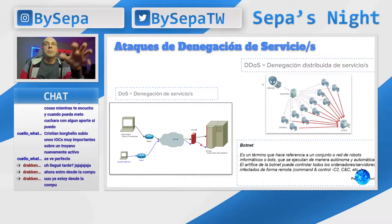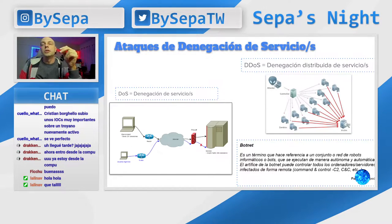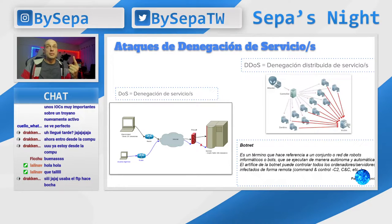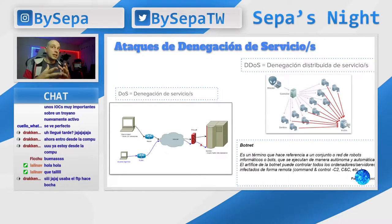¿Qué es un servicio? Un servicio, por ejemplo, es una página web, un FTP donde se bajaban archivos, un SSH que es un puerto donde te conectás para administrar un servidor, o un RDP en Windows. ¿Qué producen estos ataques? Justamente bajan ese servicio para que los usuarios legítimos no puedan acceder. Por ejemplo, si hay una página del Estado o una empresa muy grande y le hacen una denegación de servicio, los usuarios legítimos no pueden entrar.